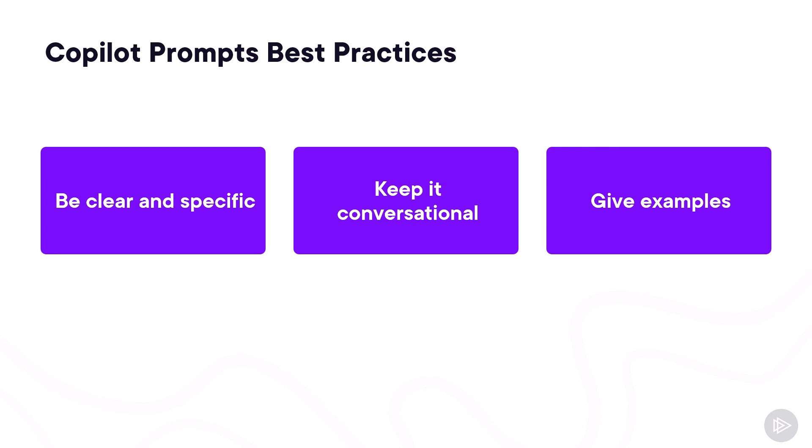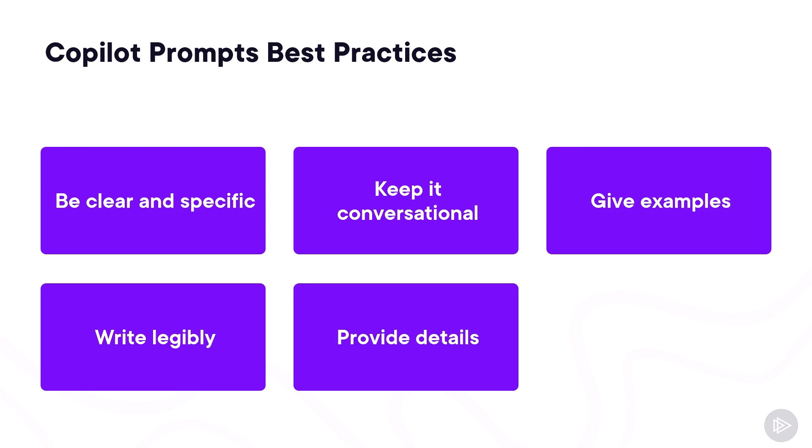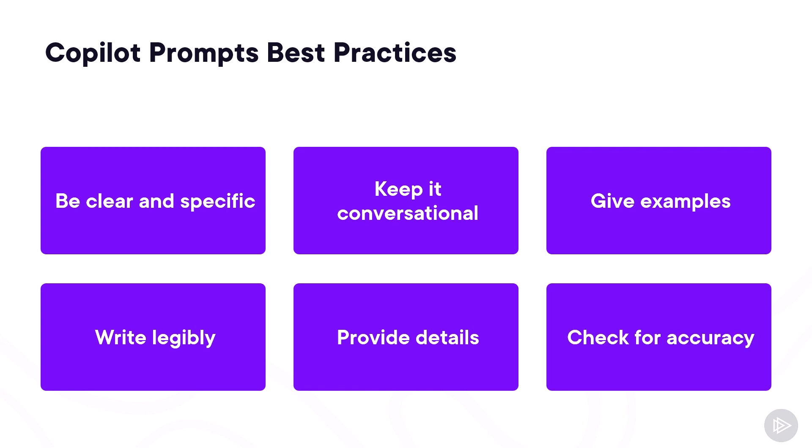Even if artificial intelligence is smart, you need to write legibly. Try to use correct punctuation, capitalization, and grammar when writing prompts, as this will help the AI produce better quality text and responses. You should also provide Copilot with contextual details to help it generate more accurate, consistent responses. And finally, please don't forget to check for accuracy — Copilot is awesome, but it's not perfect, and occasionally it may make mistakes. Always double-check Copilot's responses for accuracy, grammar, and style, and watch out for irrelevant content.